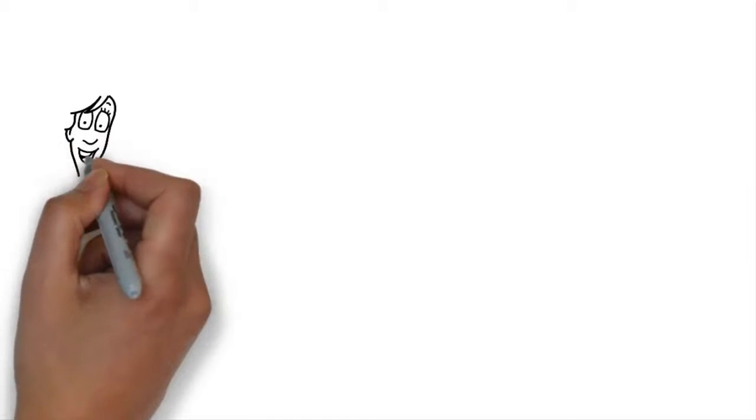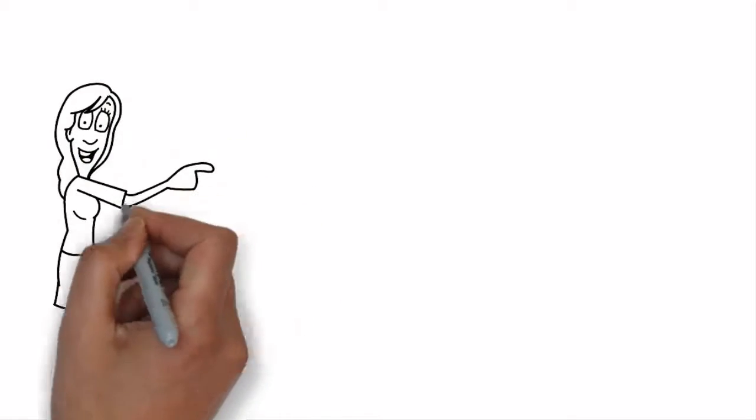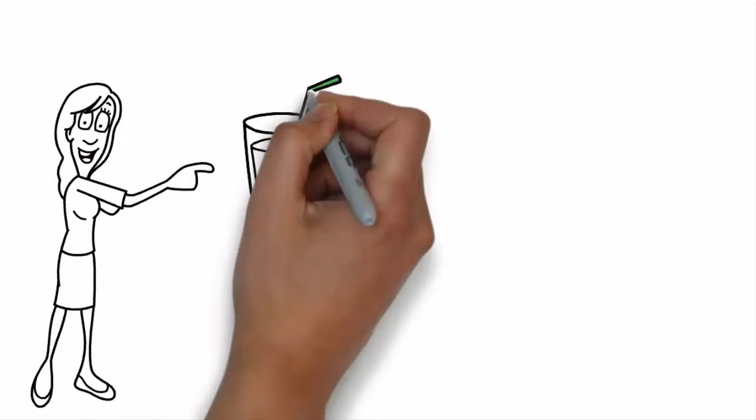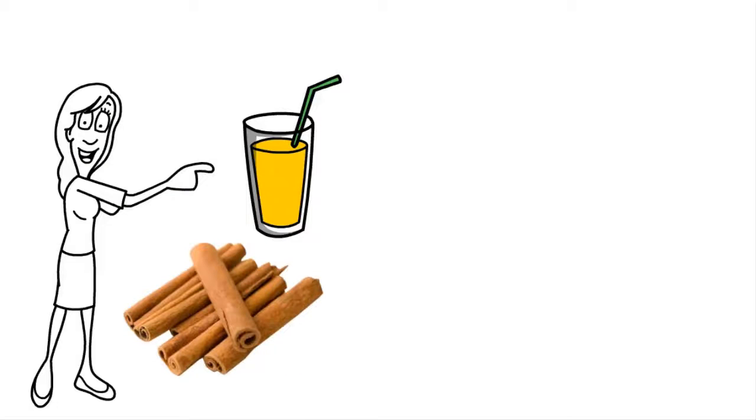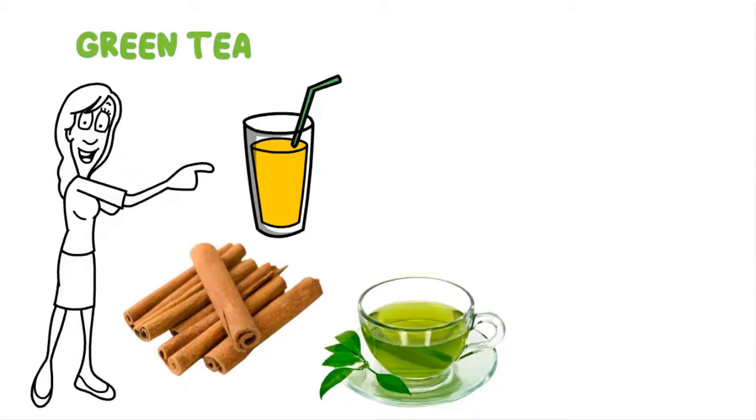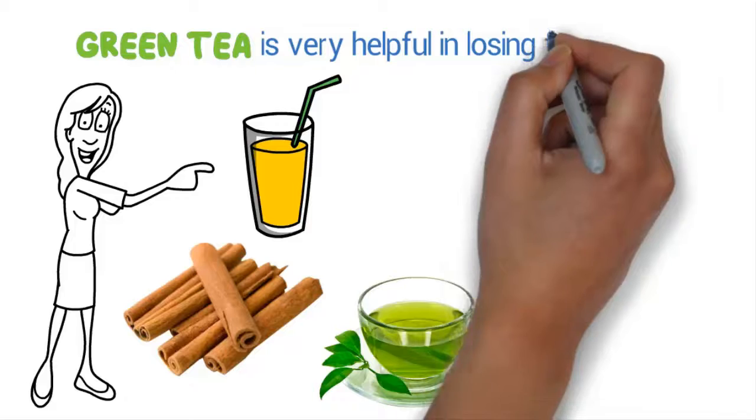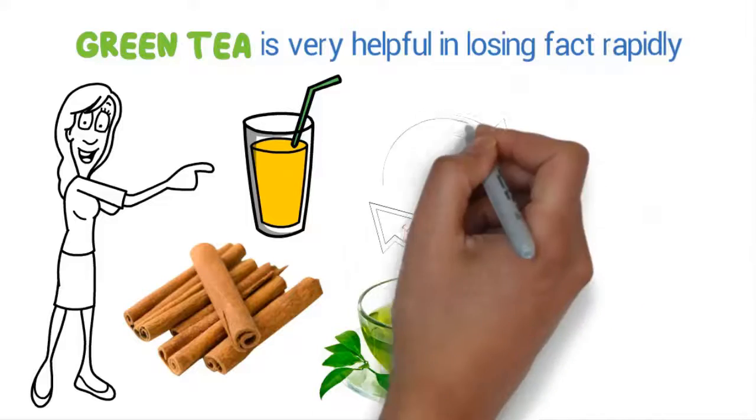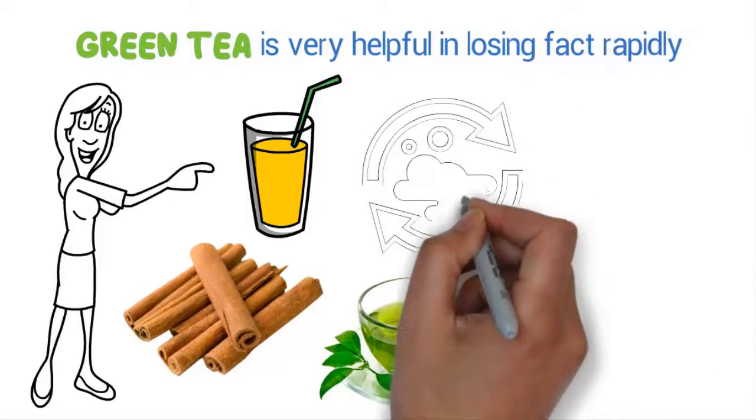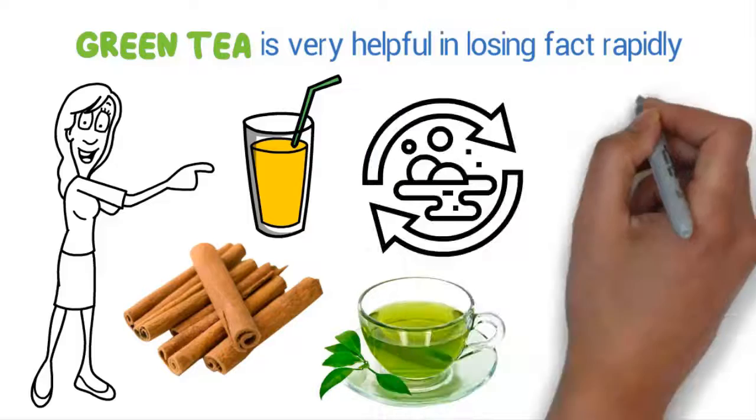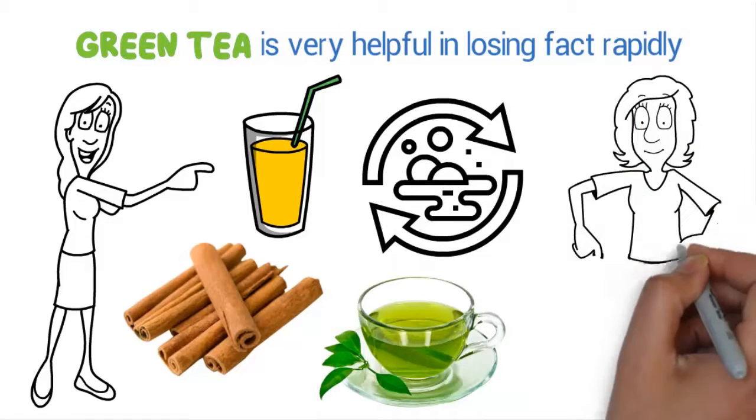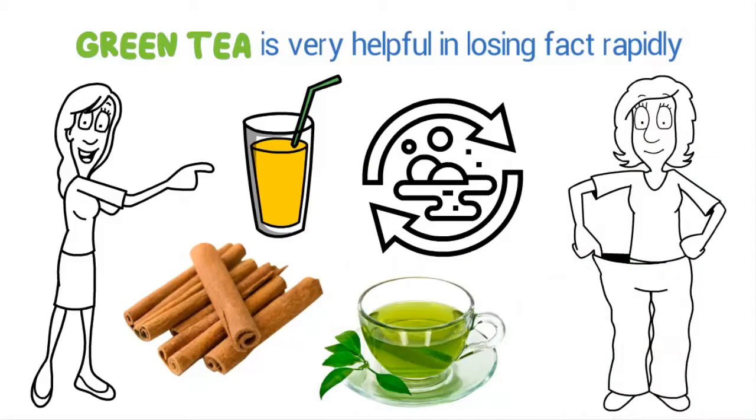Another useful tip is to have a diet consisting of calorie-burning foods, which include apple juice, cinnamon, and green tea. Green tea is very helpful in losing fat rapidly. It speeds up your metabolism to burn down excessive calories. And this is how you can lose one pant or dress size in five days or less.